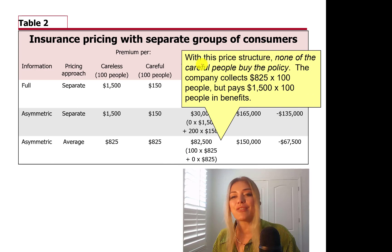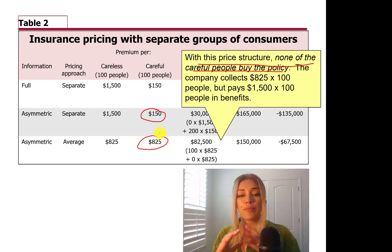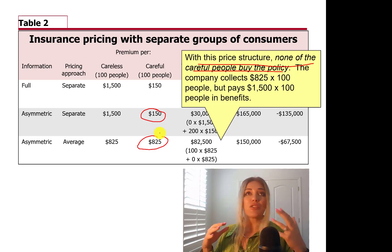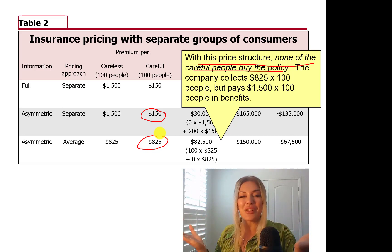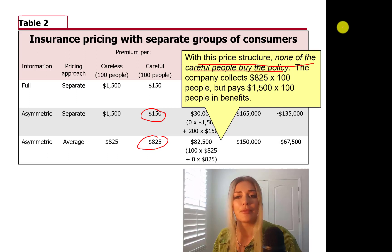This sounds like a great idea — but is it? With this price structure, none of the careful people will buy the policy. Why? Because the actuarially fair insurance for them is $150, but you are telling them to pay $825. If I am risk averse but you try to sell me flood insurance for a price far above my actual risk, I am not going to buy it — it's too expensive.